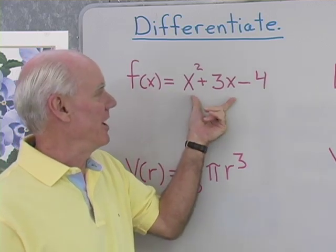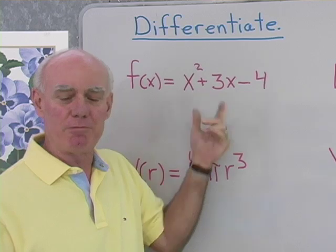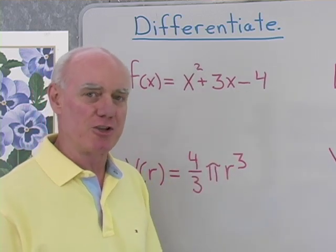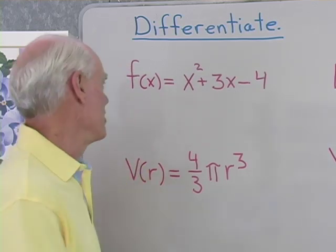First I have f(x) is equal to x squared plus 3x minus 4. Nice simple polynomial. I'm going to differentiate this. But first let's talk for a second about notation.